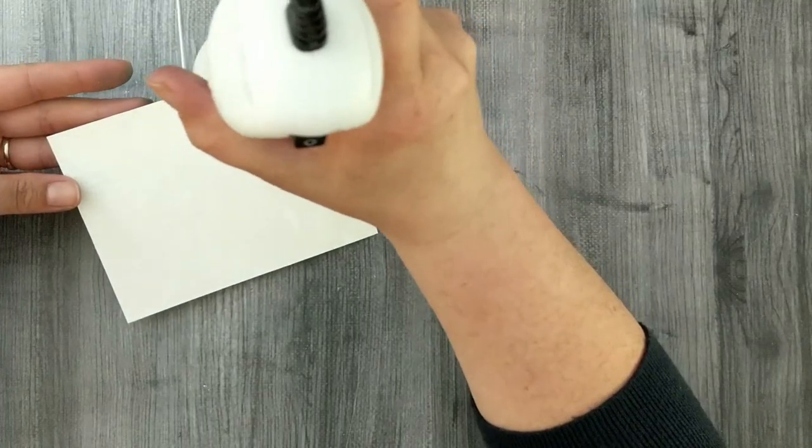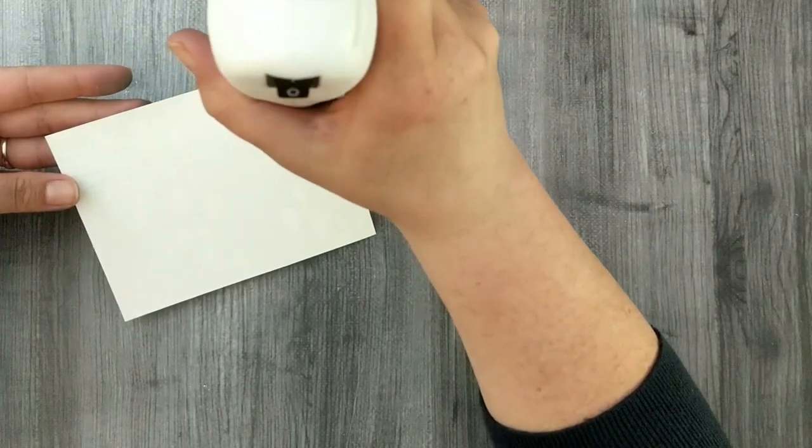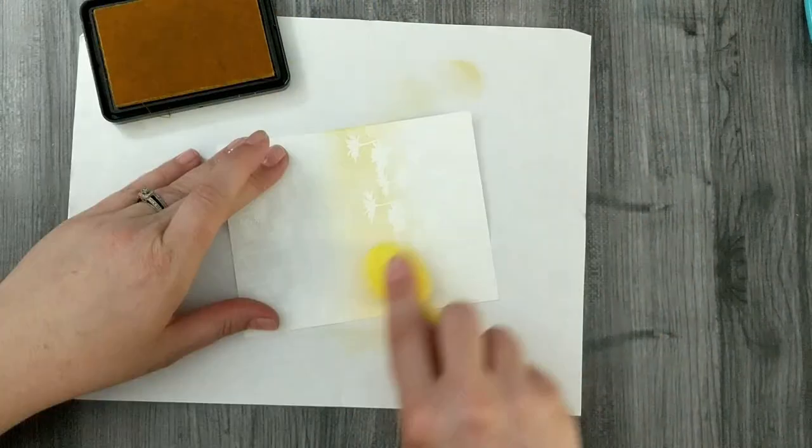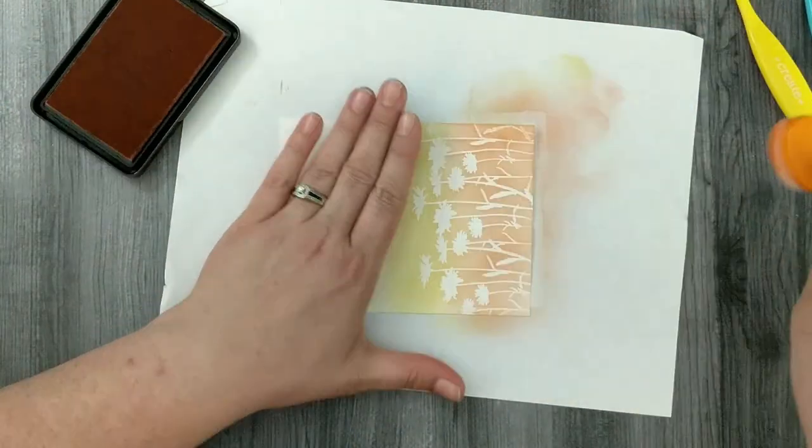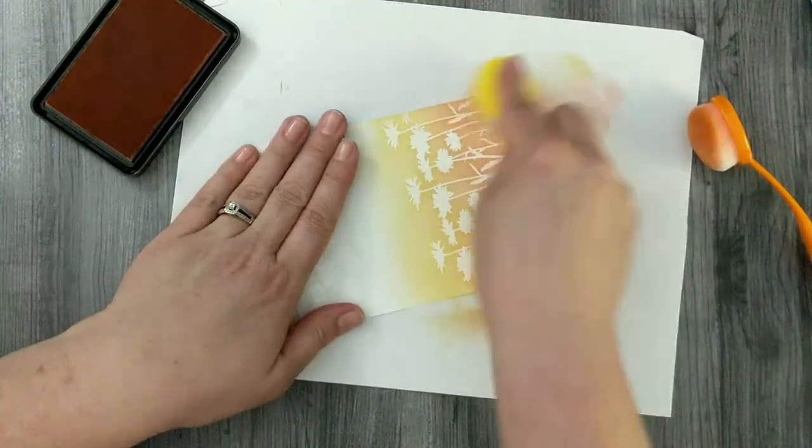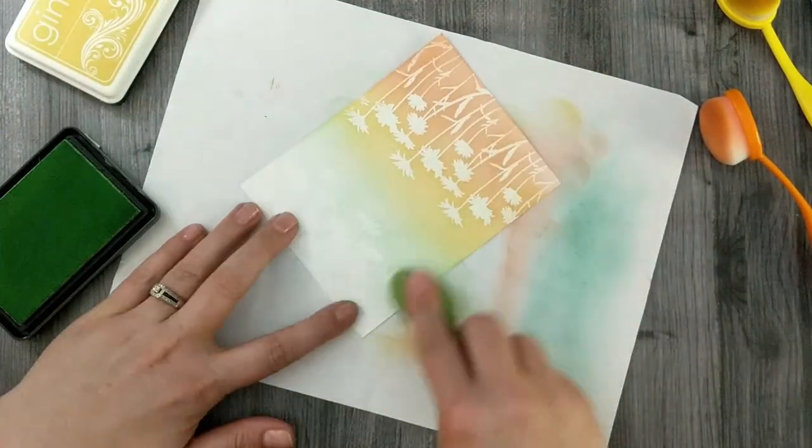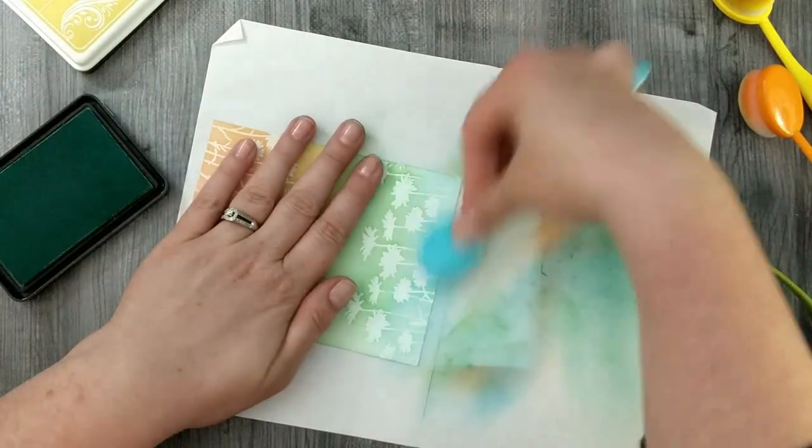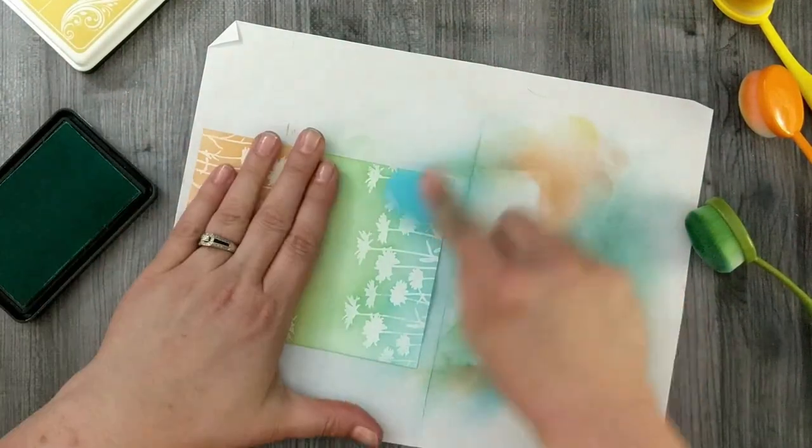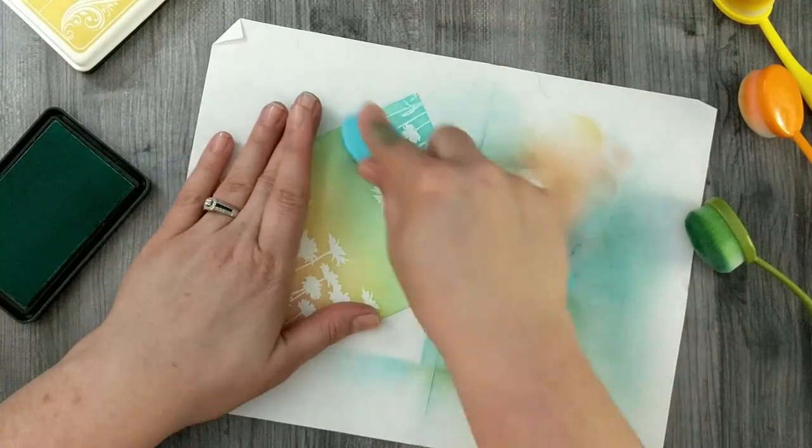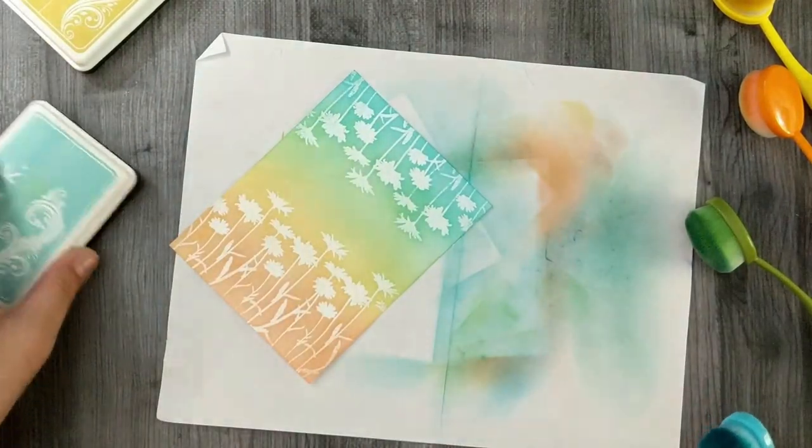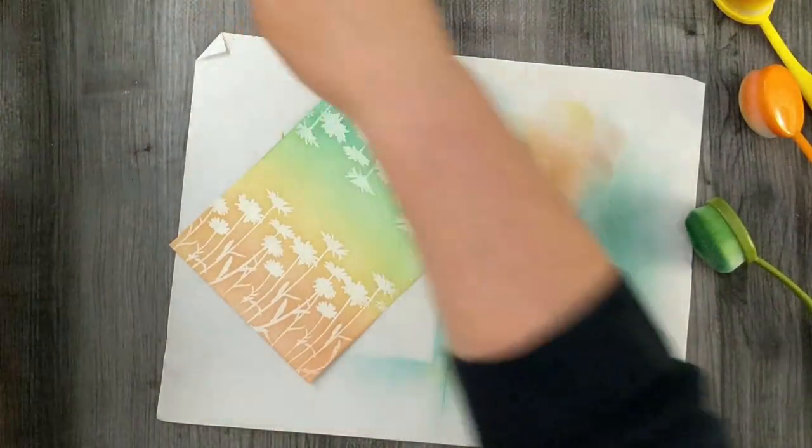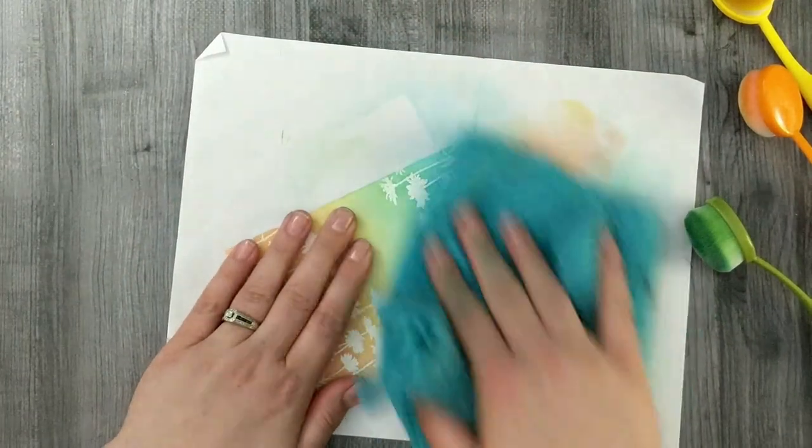I start with sweet corn and then peach Bellini. I really like those two colors together, so pretty. Then I've got apple mint and sea glass. It just creates a really soft rainbow. I really like this color combination. It's so pretty.